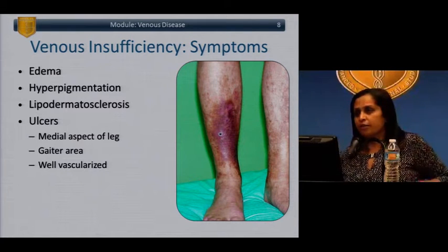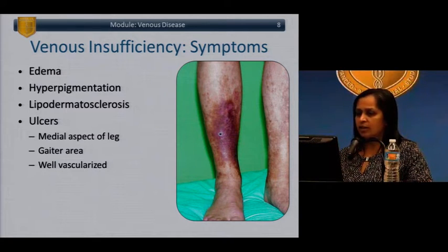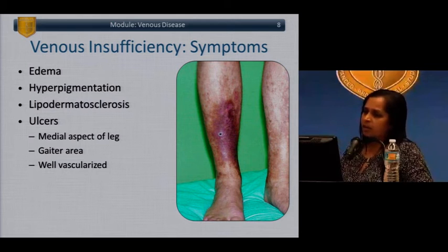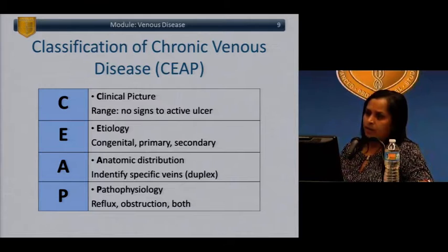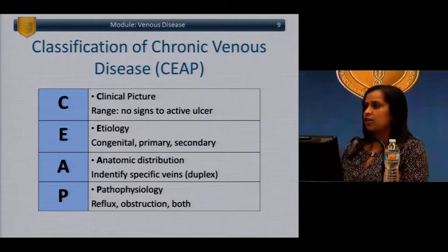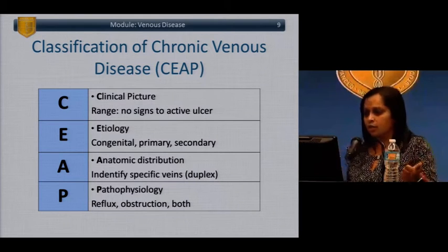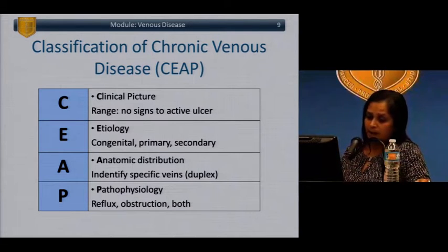The symptoms of venous insufficiency include swelling or edema, hyperpigmentation of the skin, sclerosis of the subcutaneous tissues, and ulceration, which tends to occur on the medial aspect of the leg between the knee and the ankle. Venous disease is classified using the CEEP classification, which includes the clinical picture, etiology, anatomic distribution, and pathophysiology.